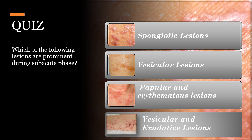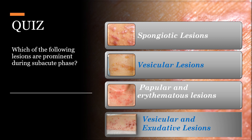Quiz time. Which of the following lesions are prominent during the subacute phase? Spongiotic lesions, vesicular lesions, papular and erythematous lesions, or vesicular and exudative lesion complex? The answer is vesicular lesions and vesicular/exudative lesion complex, which presents with HSV superinfection.